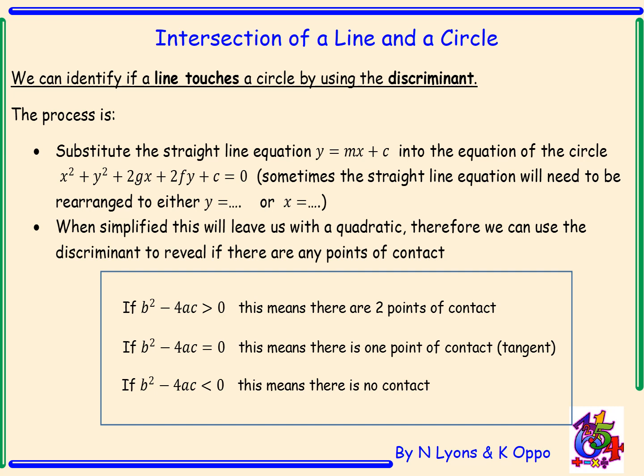As a reminder: if b squared minus 4ac is greater than zero, there are two points of contact. If b squared minus 4ac is equal to zero, there is one point of contact, meaning the line is a tangent. If b squared minus 4ac is less than zero, there is no contact at all.